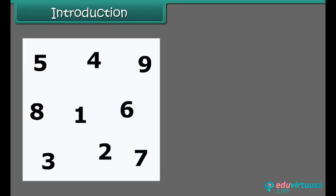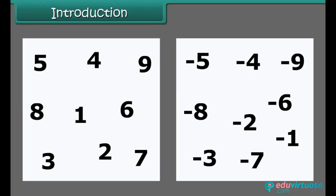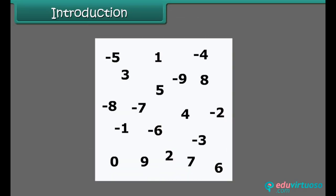Students, look at these numbers — these are the whole numbers. Now look at these numbers — these are the negative numbers. But what do we call a bigger collection of numbers which contains whole numbers and negative numbers? Those numbers are called integers. Come, let's learn more about integers.